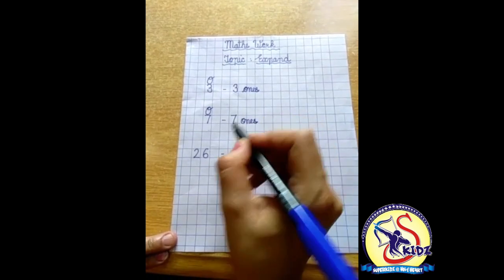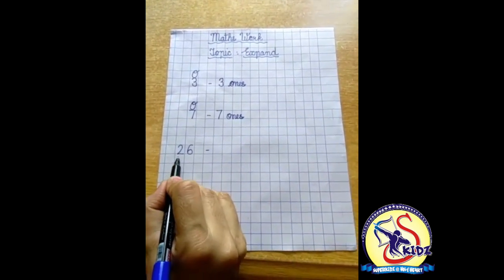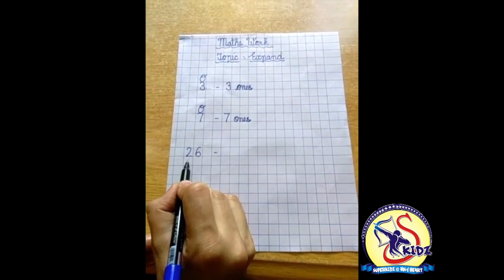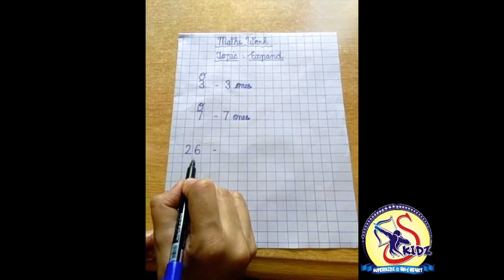Now see the next number, 26. 26 is a double digit number.